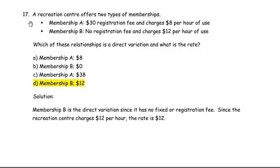Question number 17 for linear relations EQAO practice questions for grade 9 applied. The question says a recreation center offers two types of memberships: membership A, you pay a $30 registration fee and then you're charged $8 per hour of use, and membership B, there's no registration fee but they charge $12 per hour of use.